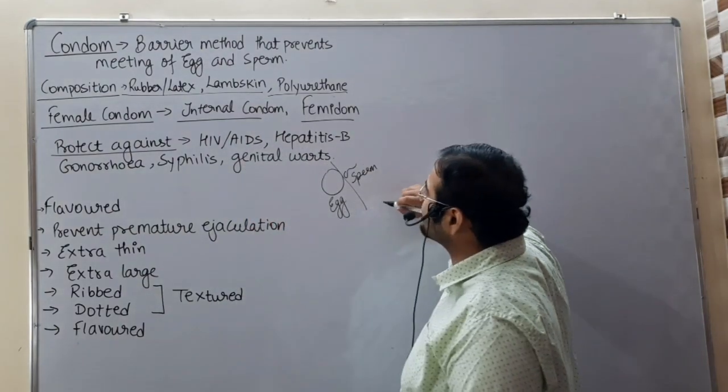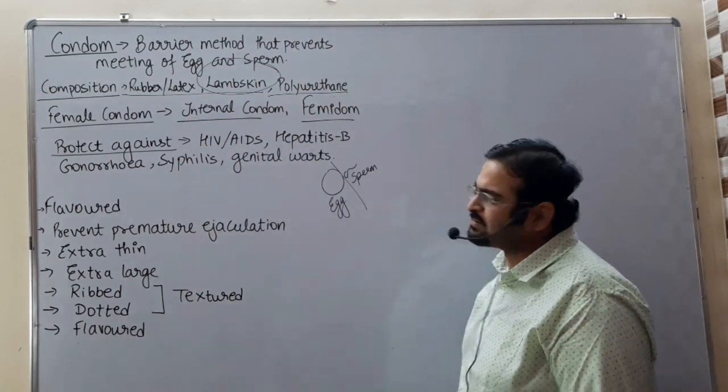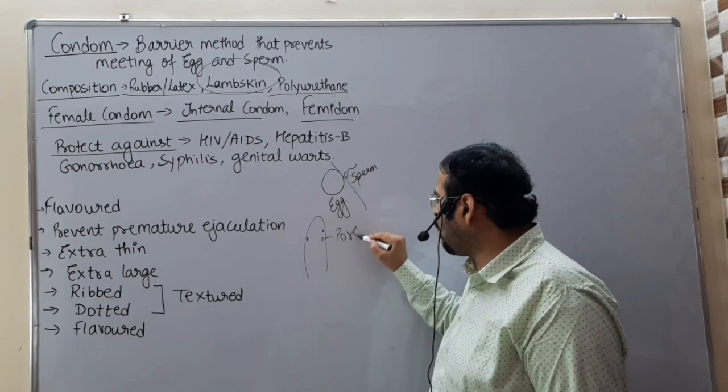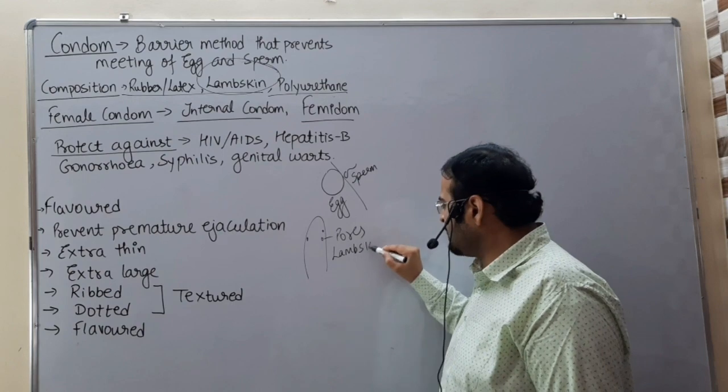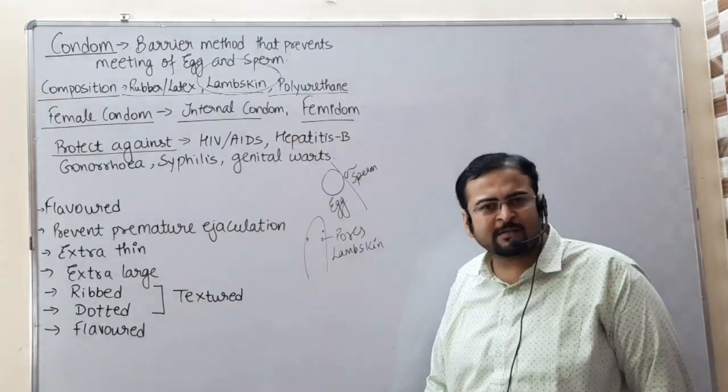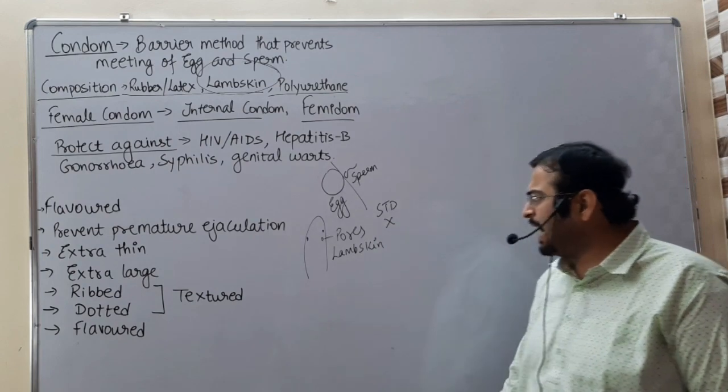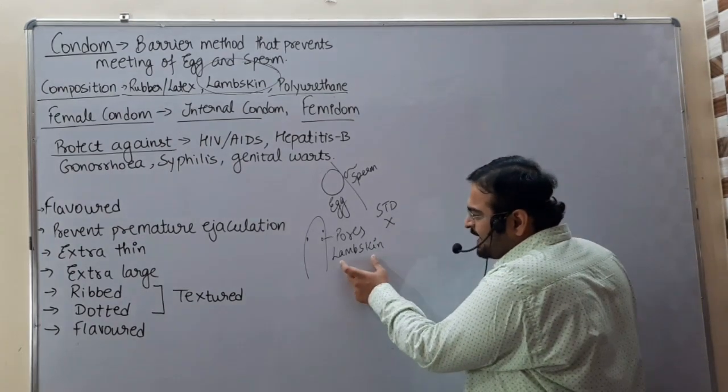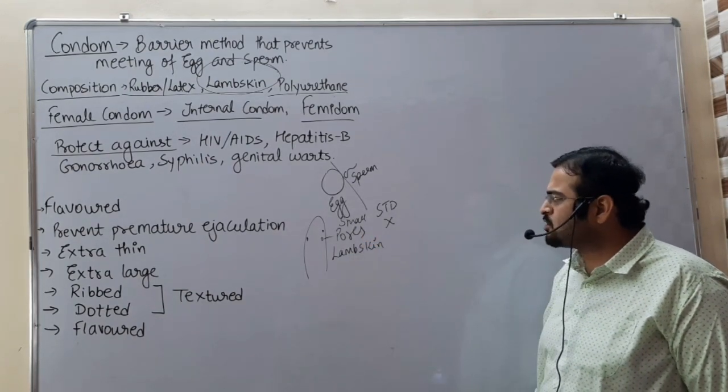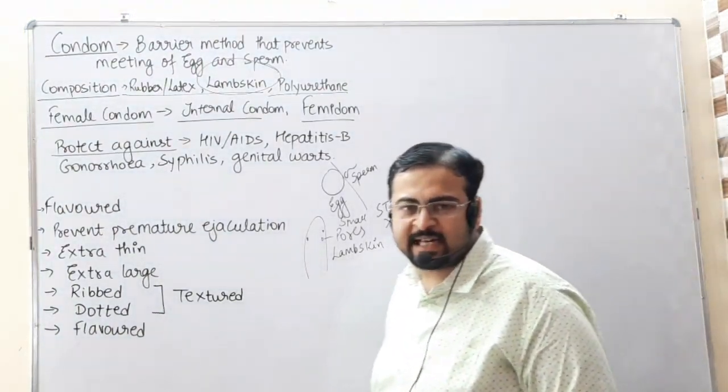But if someone is using a condom made of natural skin or lamb skin, then the lamb skin condom has small pores and does not protect the person from STD or sexually transmitted diseases.